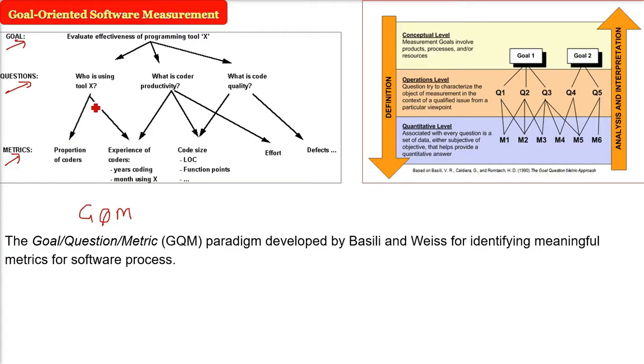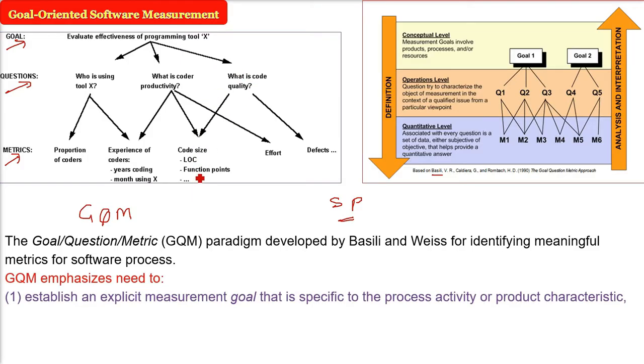This GQM paradigm was developed by Basili and others for identifying meaningful metrics for software processes. For software processes, what will be a proper way for this software measurement?